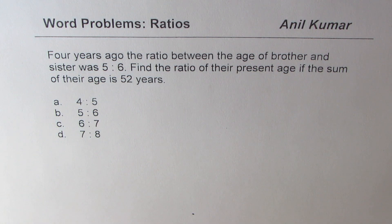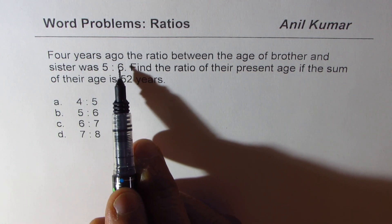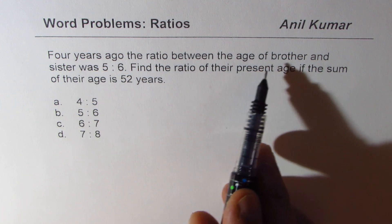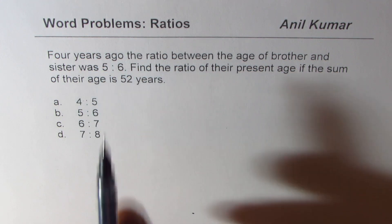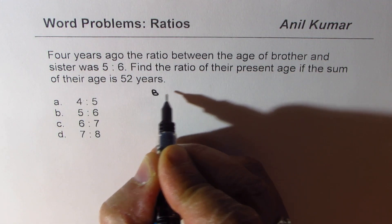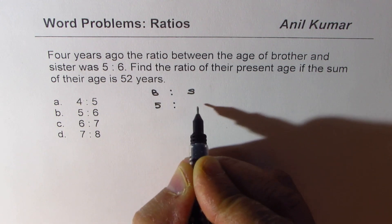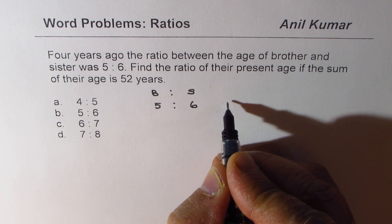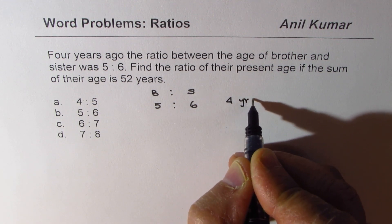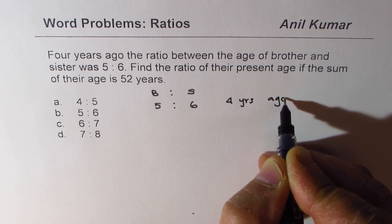The question here is: four years ago the ratio between age of brother and sister was 5 is to 6. So we're talking about the age of brother and sister, it is given as 5 is to 6. This is four years ago, right, past tense.